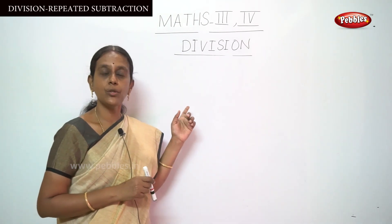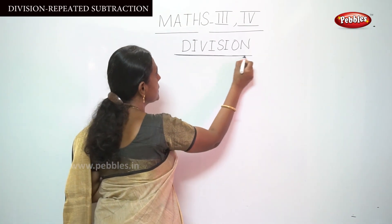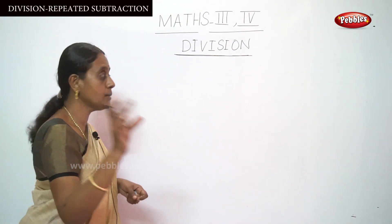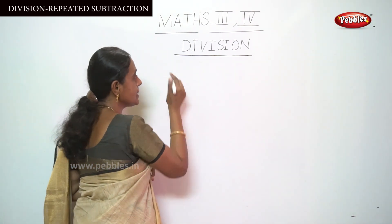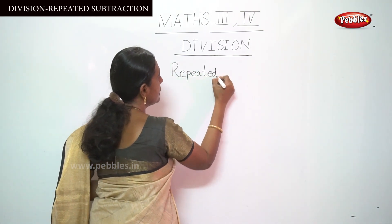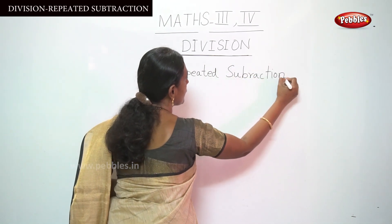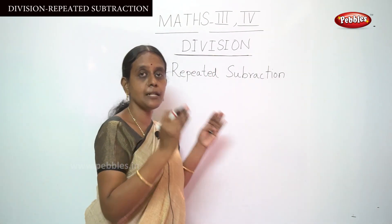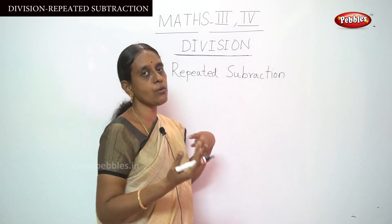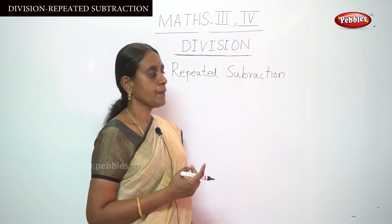In our addition topic and multiplication topic, multiplication is a repeated addition. And in division, the term is that division is repeated subtraction. So division means repeated subtraction, and multiplication is the opposite of division, called repeated addition.